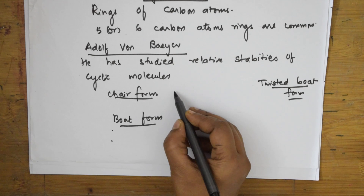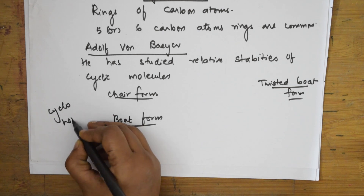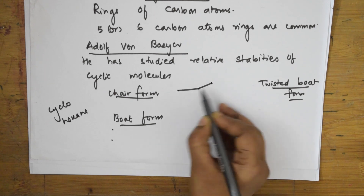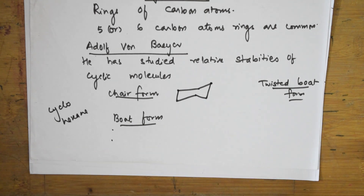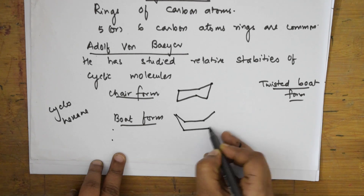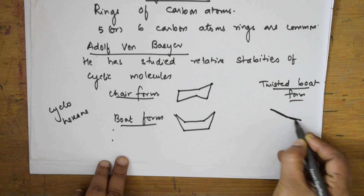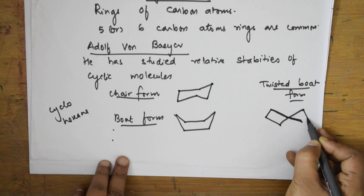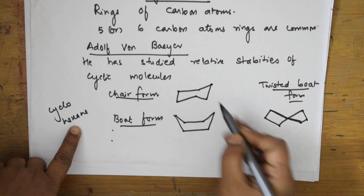When drawing the chair form of cyclohexane, it looks like this. I will be taking the example of cyclohexane here. The chair form, boat form, and twisted boat form each have 6 carbon atoms — 1, 2, 3, 4, 5, 6 — hexane.